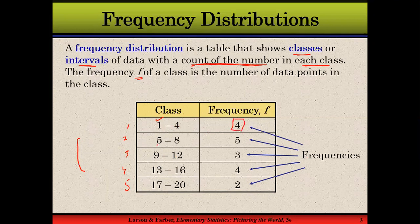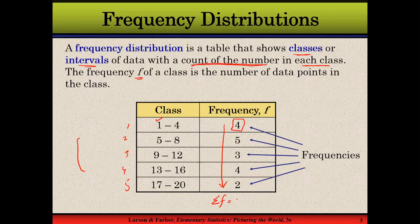The corresponding frequencies are: from one to four there are four values, five to eight there are five values, nine to twelve there are three values, thirteen to sixteen there are four values, and seventeen to twenty there are two values. If you add them up, the sum of these frequencies — denoted sigma f — equals 18. Sigma denotes summation or sum of values.